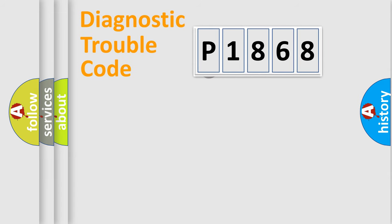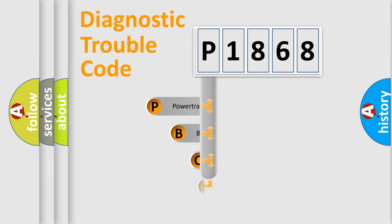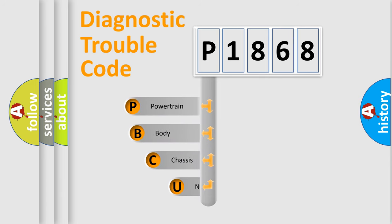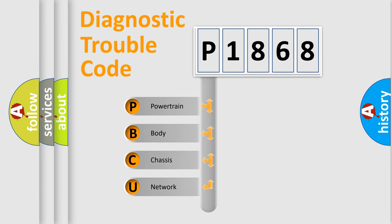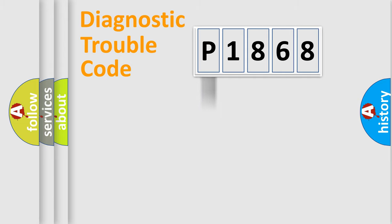First, let's look at the history of diagnostic fault code composition according to the OBD2 protocol, which is unified for all automakers since 2000. We divide the electric system of automobile into four basic units: Powertrain, Body, Chassis, and Network. This distribution is defined in the first character code.